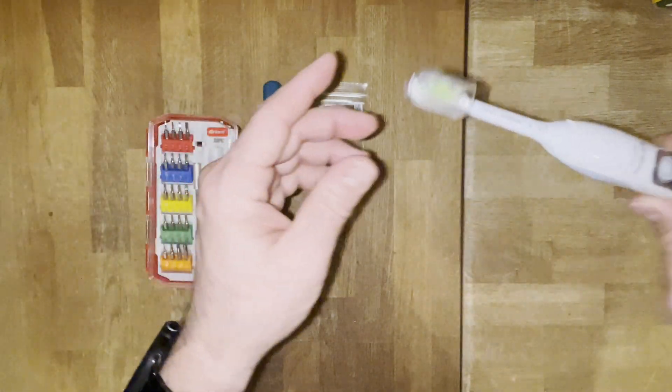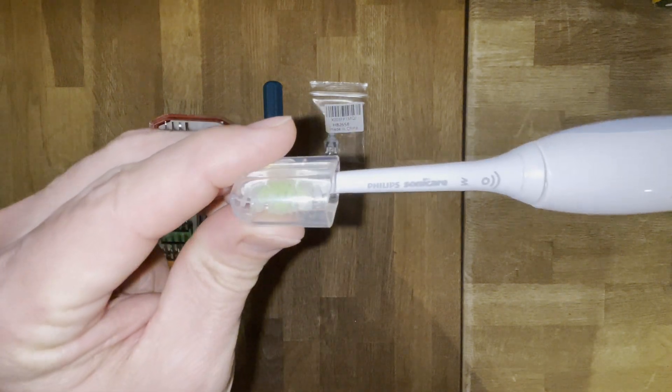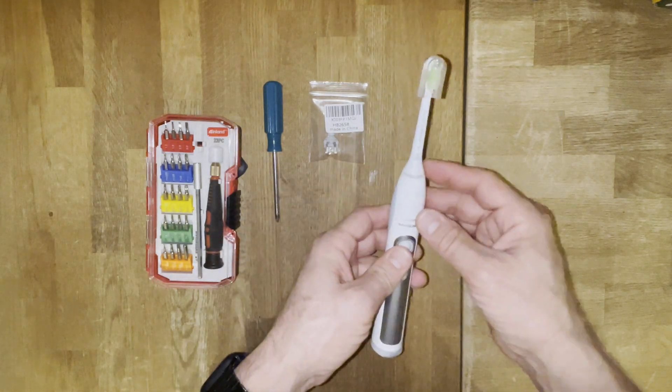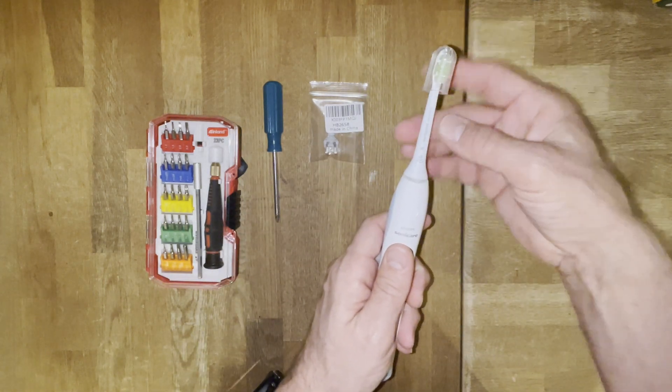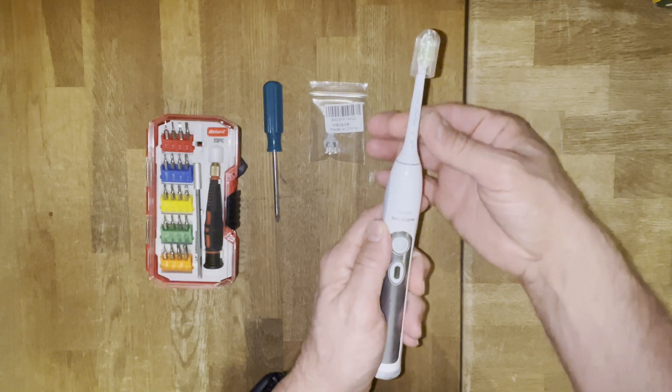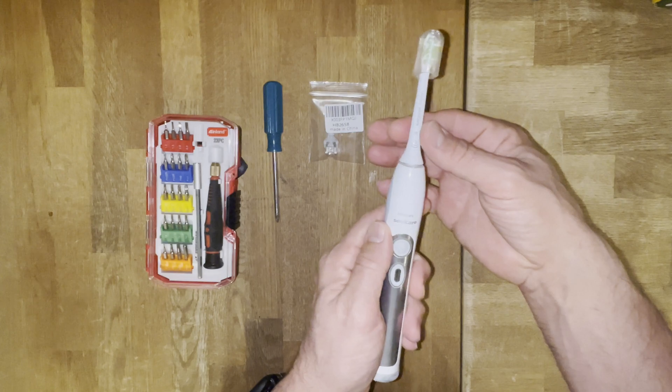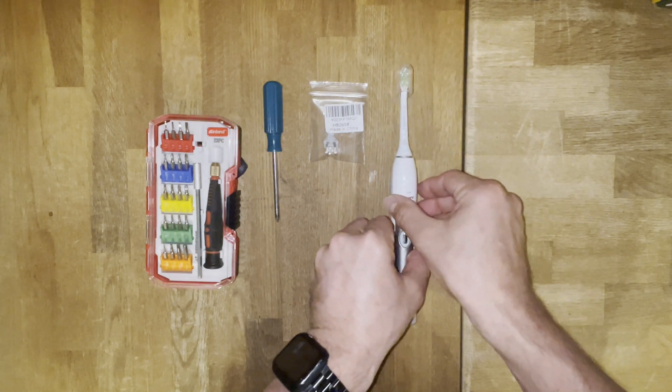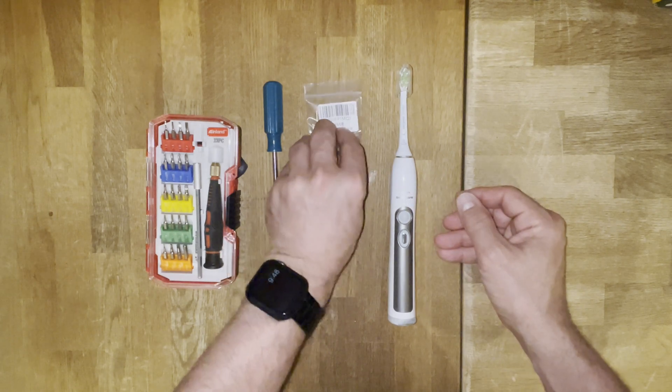Today we'll be repairing a Philips Sonicare toothbrush. This happens to be model HX6980. And for those of you who don't know, this head of the toothbrush is supposed to be quite stiff, not this loose. So after a few searches, this apparently is a common issue with these toothbrushes.